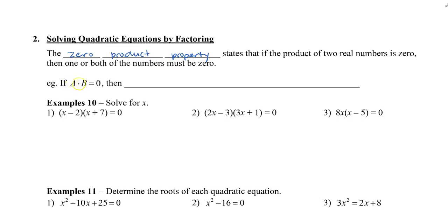For example, if we have a times b and that equals zero, then one of those numbers has to equal zero. So either a equals zero, or b equals zero — or actually, we can have a equals zero and b equals zero.